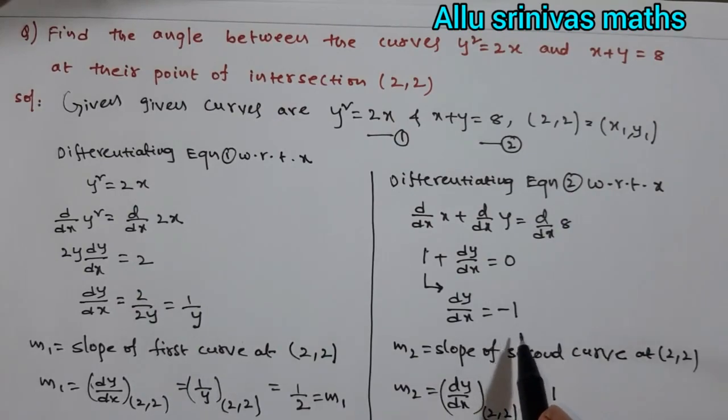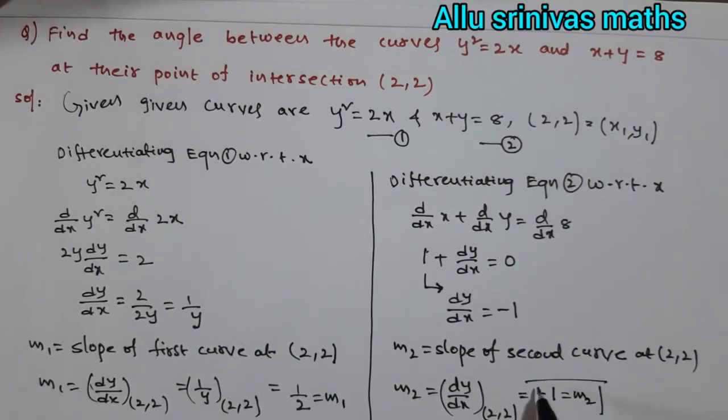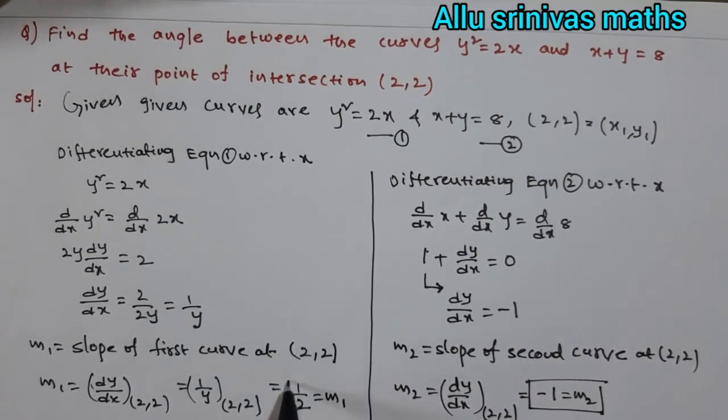dy/dx does not contain x and y terms, so then finally m₂ = -1. And this is m₁.